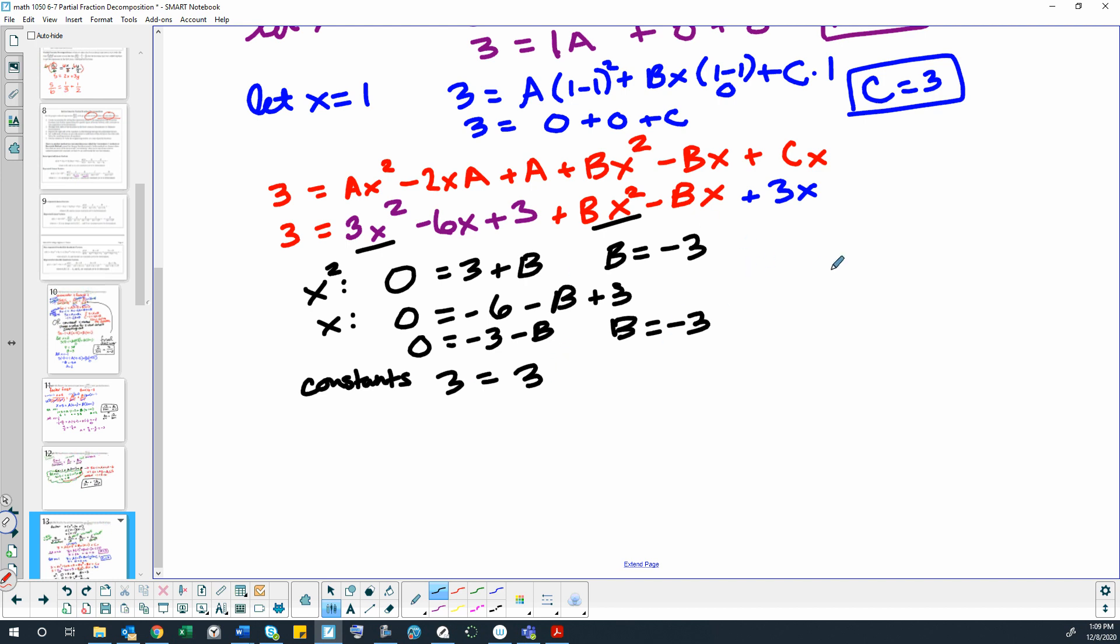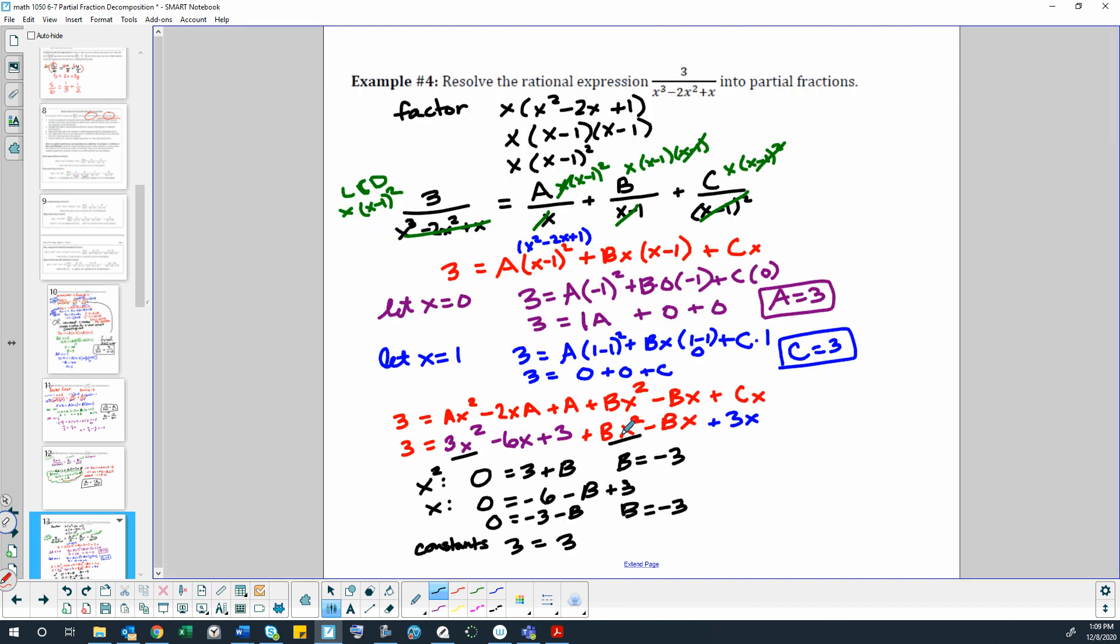So the last thing we do is we write up our final answer. So we will have 3 over x plus negative 3 over x minus 1 plus 3 over x minus 1 squared.